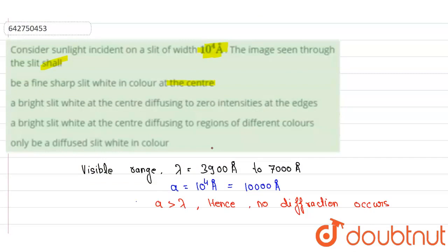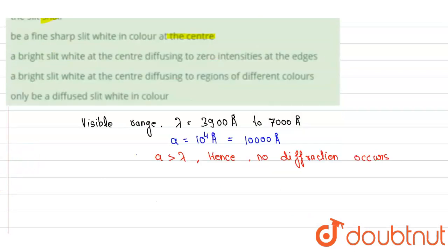Now if you look at it, the sunlight is of what color? White. So the image seen through the slit would be a fine, sharp white light in color at the center.